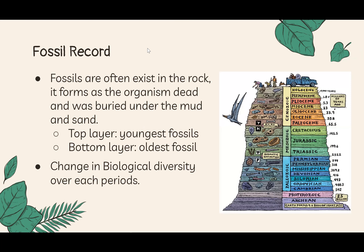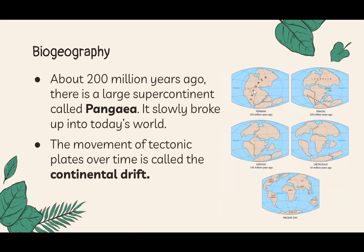First, let's look at the fossil record. Fossils are often found in rock layers — organisms buried under mud and sand form different layers over time. The bottom layer is the oldest and the top layer is the youngest. These fossils indicate which time period they are from and how biodiversity has changed over time. The geologic table shows different eras and periods over billions and millions of years.